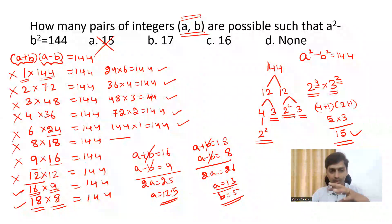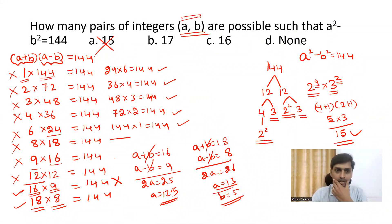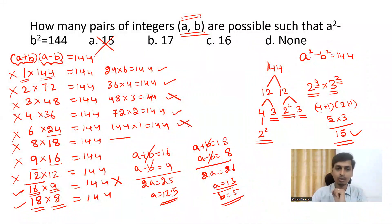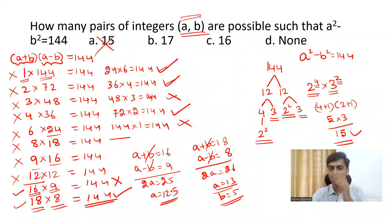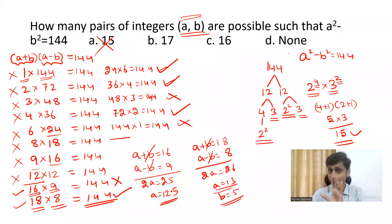We must choose only factor pairs where both numbers are even. So we skip 16×9 (9 is odd), 48×3 (3 is odd), and 144×1 (1 is odd). That leaves us with four valid factor pairs: 18×8, 24×6, 36×4, and 72×2. You might think the answer is 4, but that is also wrong because the question asks for pairs of integers, and integers can be positive or negative.